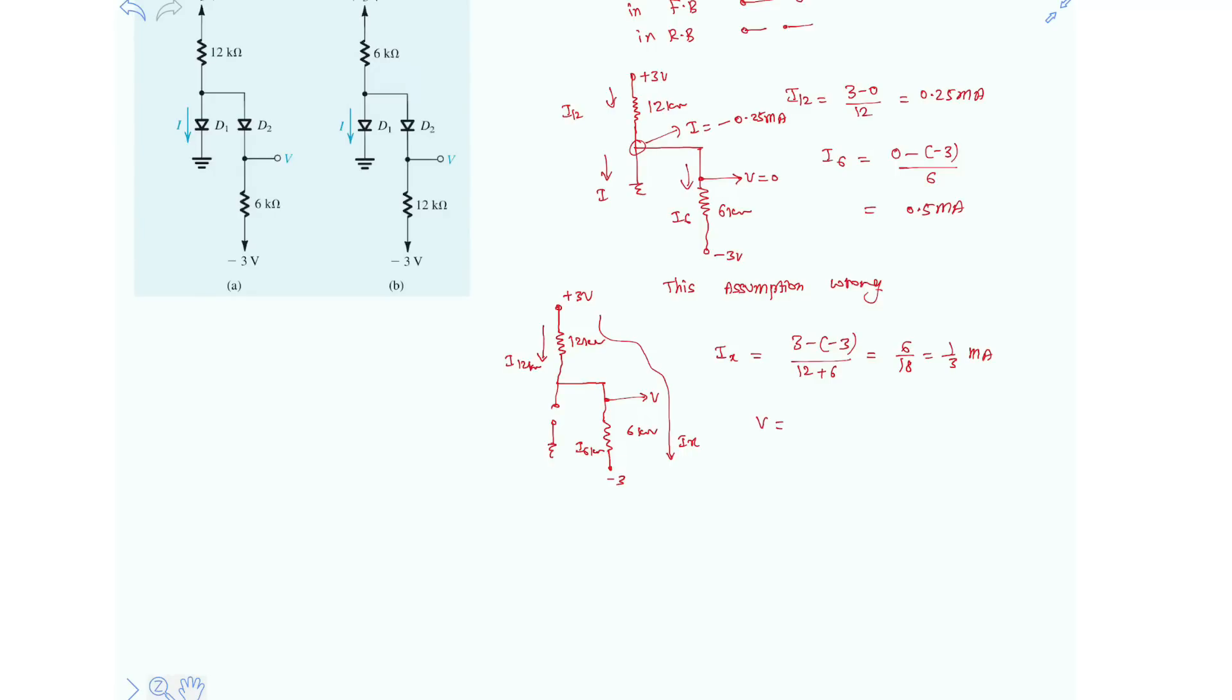V is nothing but 1 over 3mA multiplied with 6kΩ minus 3V. So it is nothing but 2 minus 3, which is minus 1V. So clearly, the answer for the first part of the question is I equals 0 and V equals minus 1V.